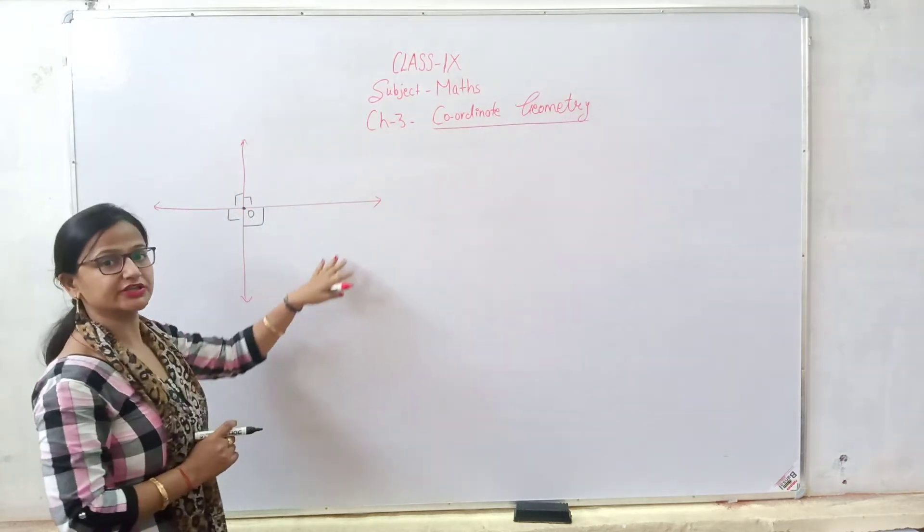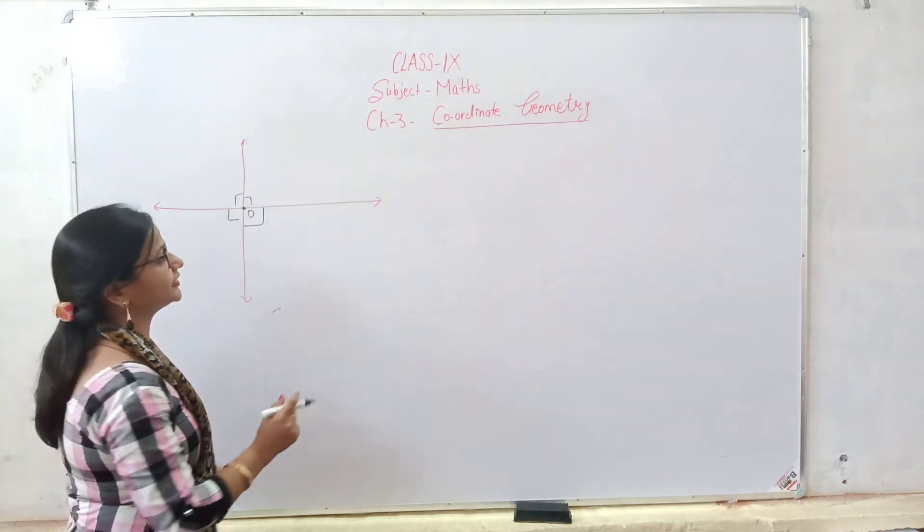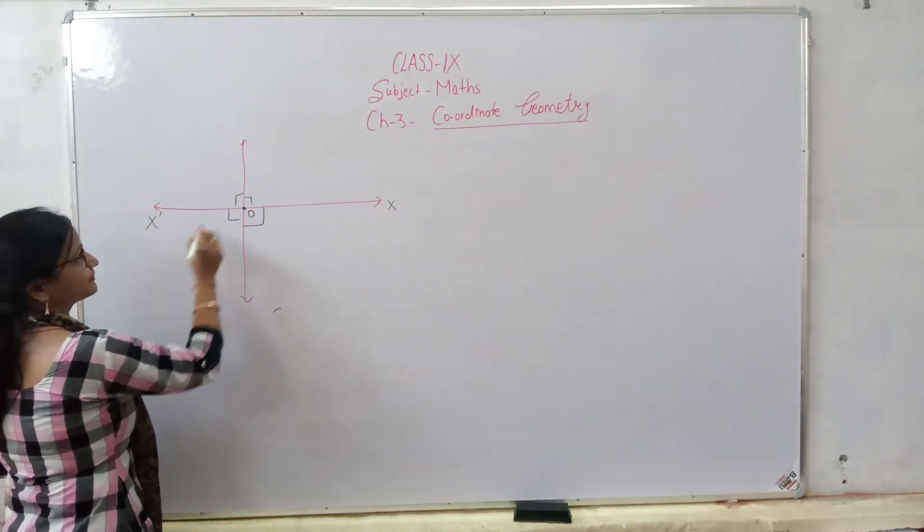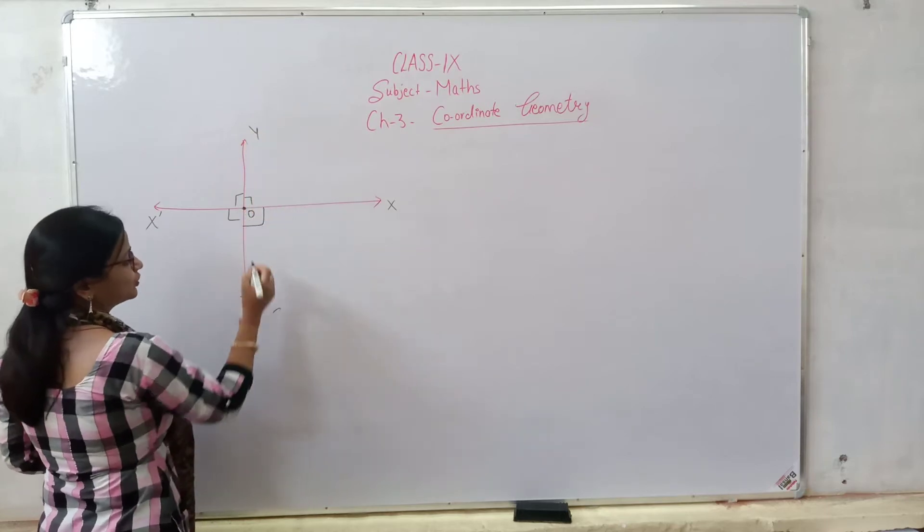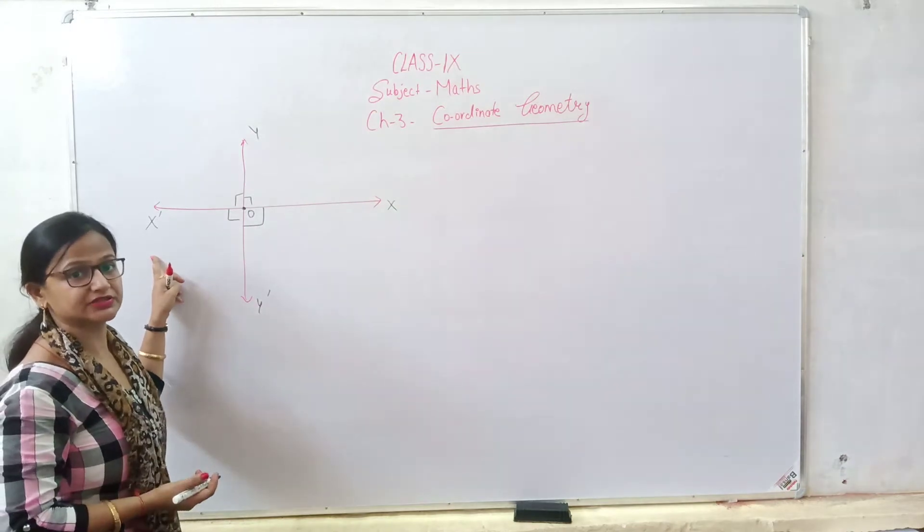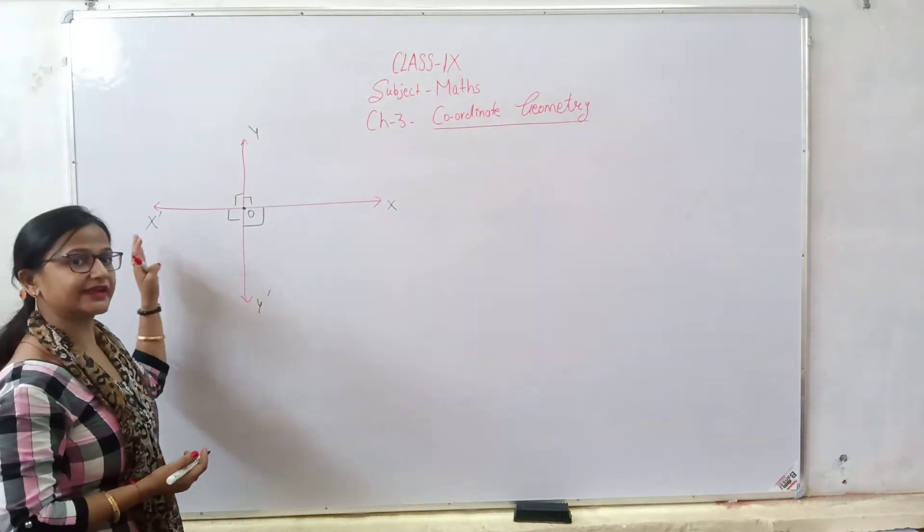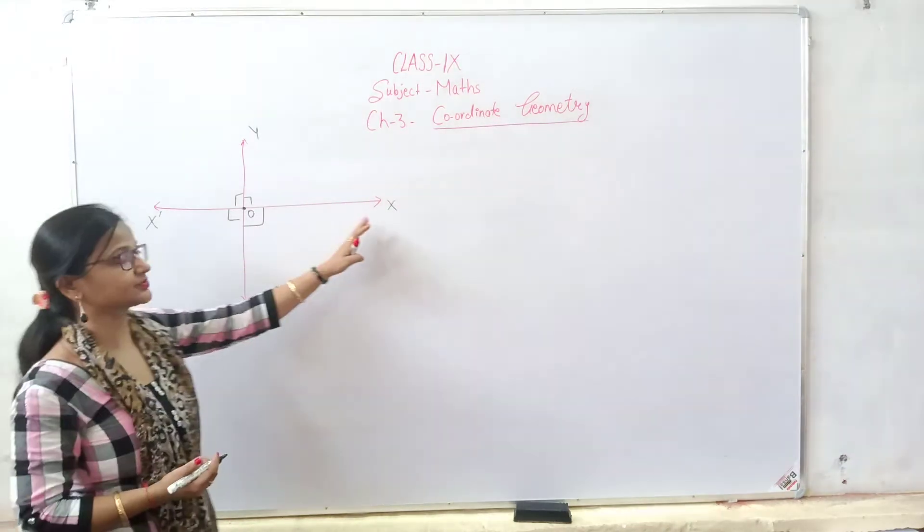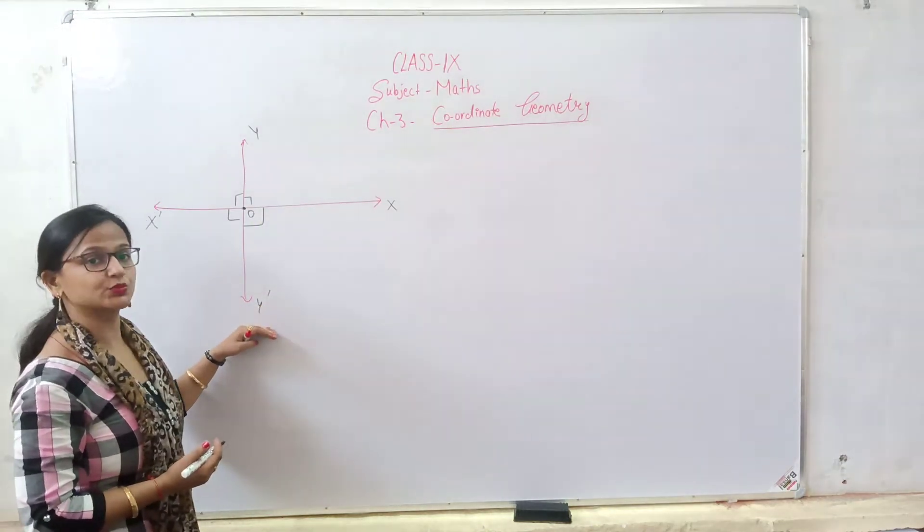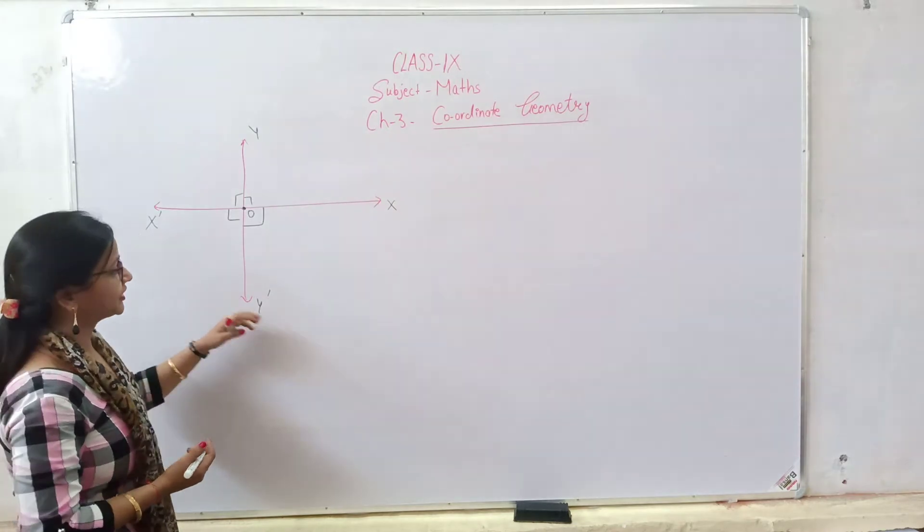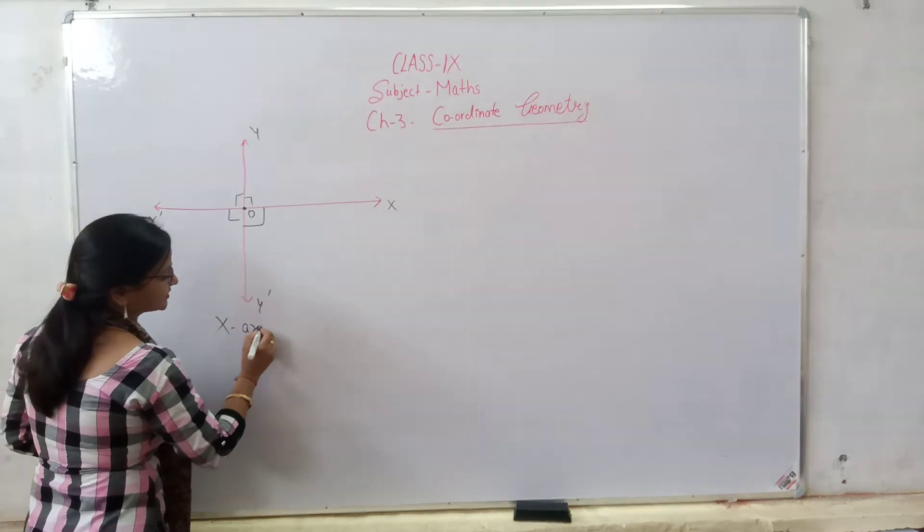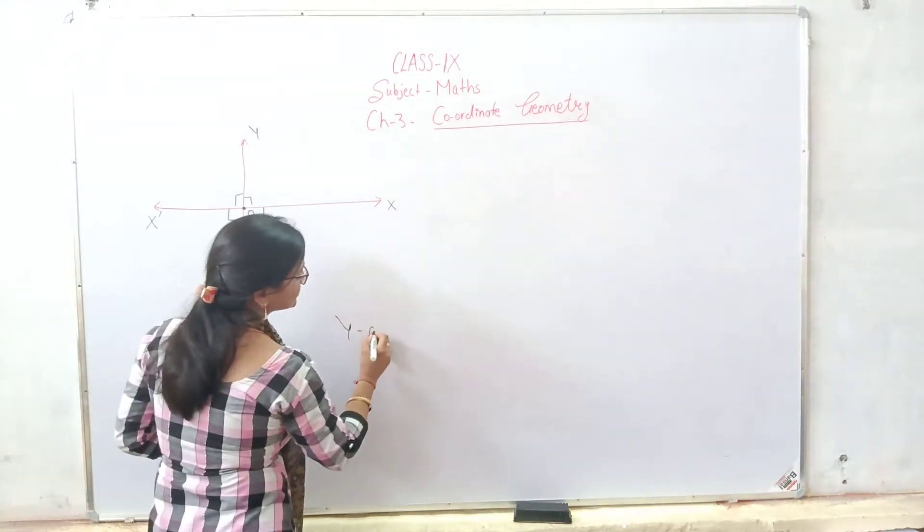The definition is that when two lines are mutually perpendicular to each other and intersecting at a point O, it is known as the coordinate plane. These lines we have seen as x-o-x dash and y-o-y dash. Here we have negative numbers, x is positive numbers, y is positive numbers, y dash is negative numbers.